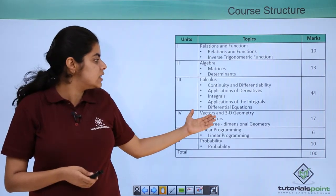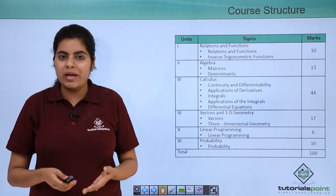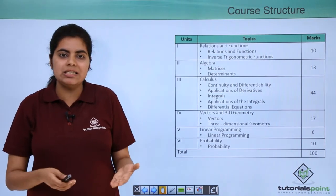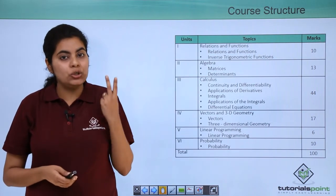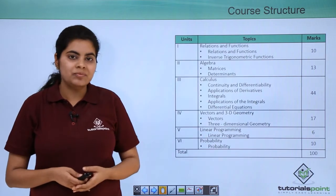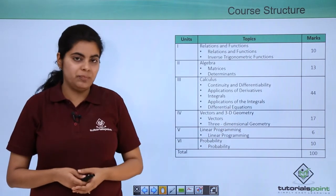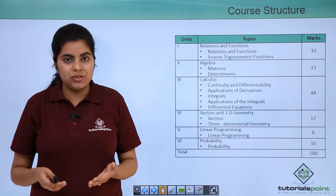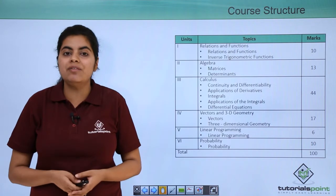Next we come to the importance of the unit number four which is vectors and 3D. So vectors and 3D means vectors and three-dimensional geometry. It includes again two chapters. The first one is named as vectors and the second one is named as three-dimensional geometry. And both these chapters together constitute an important total of 17 marks.